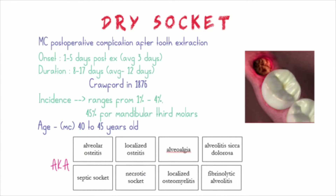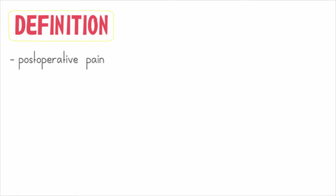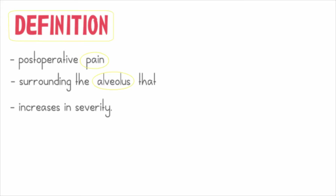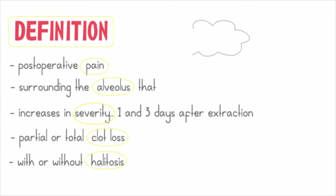There are several names given to dry socket; the most common ones are alveolar osteitis and alveolitis sicca dolorosa. The definition is given by I.R. Blum, divided into five points. Dry socket is characterized by post-operative pain surrounding the alveolus that increases in severity during a period of one to three days after a tooth extraction, followed by partial or total loss of the blood clot from the socket, with or without halitosis. The key words can be remembered with the mnemonic PASCH or PATCH.